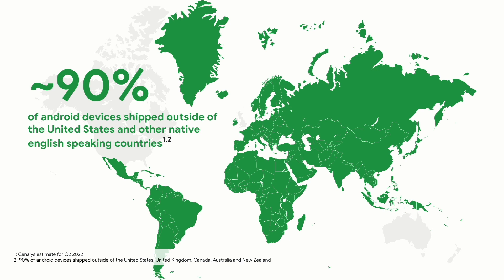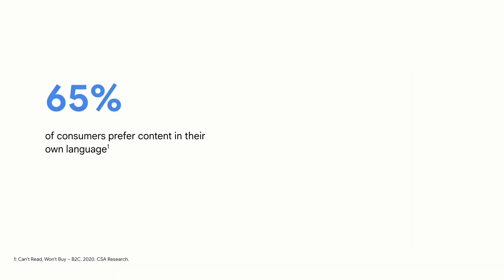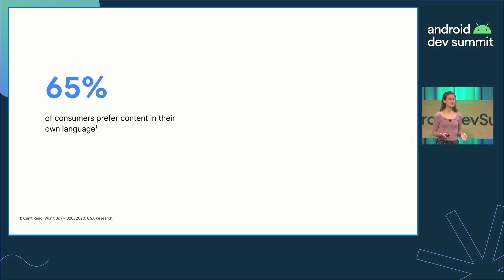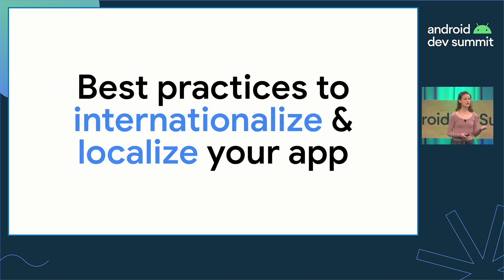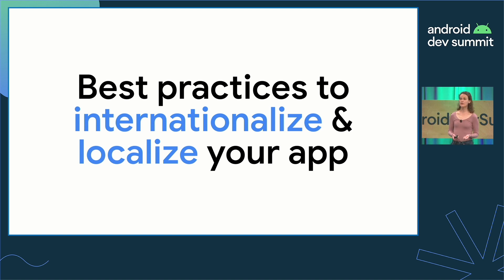Developing English first or English only could limit your app's reach and helpfulness, because 90% of Android devices are shipped outside of the United States and other native English-speaking countries. Consumers prefer to consume content in their own language and might not make a purchase unless they can access information in their own language. The goal of this talk is to provide you best practices to internationalize and localize your app to improve your app's helpfulness and reach.